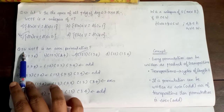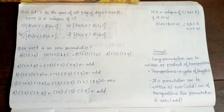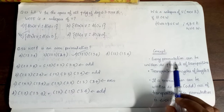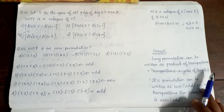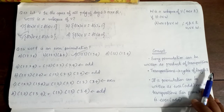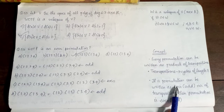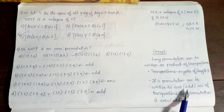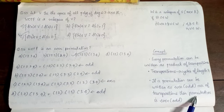Next, Question 56: which of the following is an even permutation? Even permutation means all permutations expressed as transpositions. Transpositions are cycles of length 2. A permutation is even or odd depending on whether it is a product of an even or odd number of transpositions respectively.